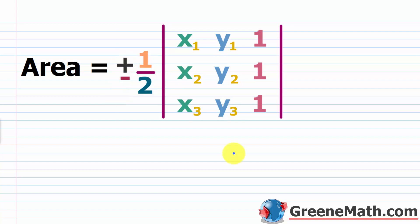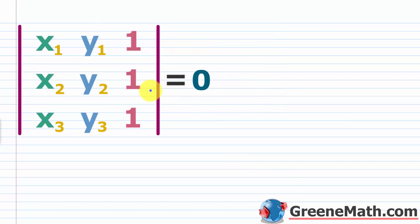What we didn't talk about in the last lesson specifically was what we do when this formula gives us a result of zero, meaning there's absolutely no area. It turns out that if you have three points that are supposed to be vertices of a triangle and you plug them into this formula and get zero, those three points absolutely lie on the same line — those three points are collinear. So if the determinant evaluates to zero, we know those three points are collinear.